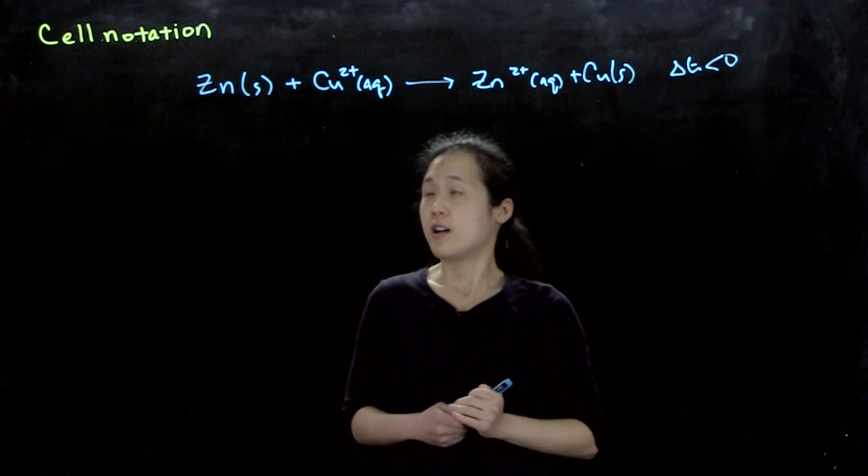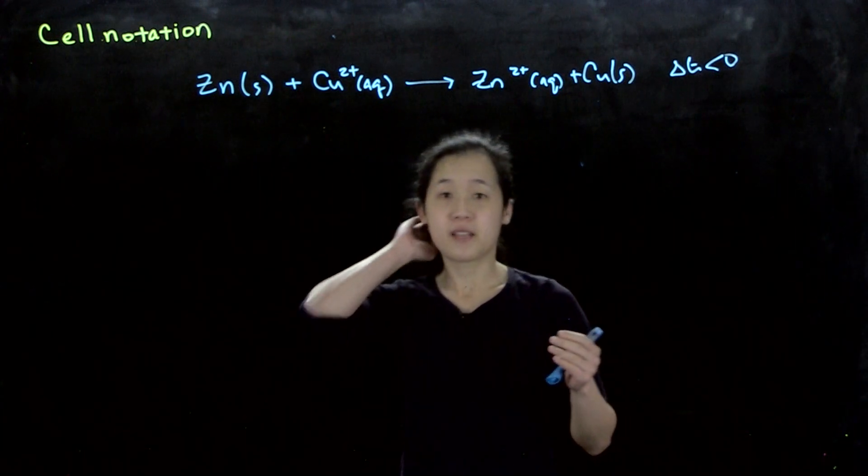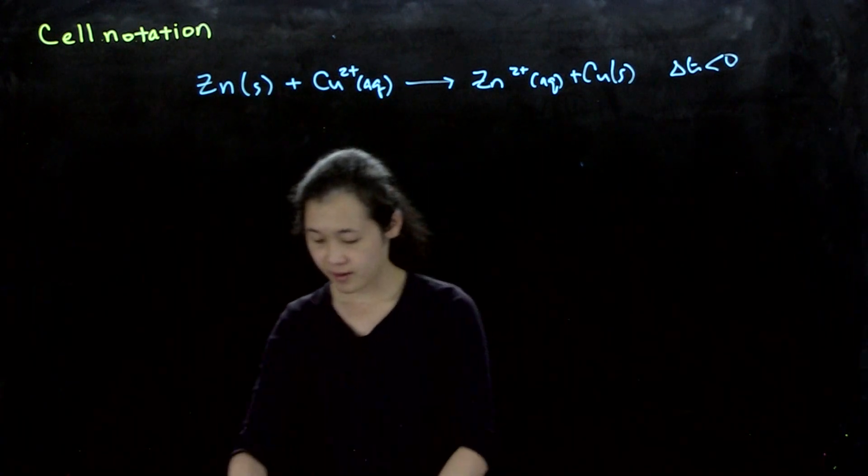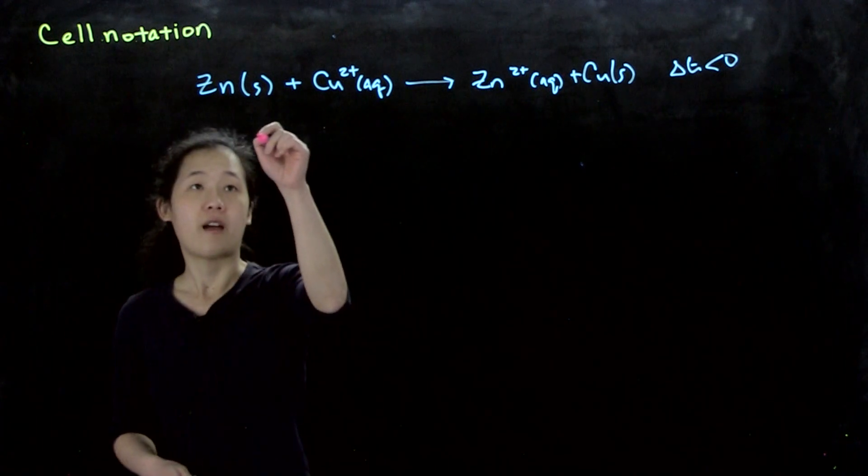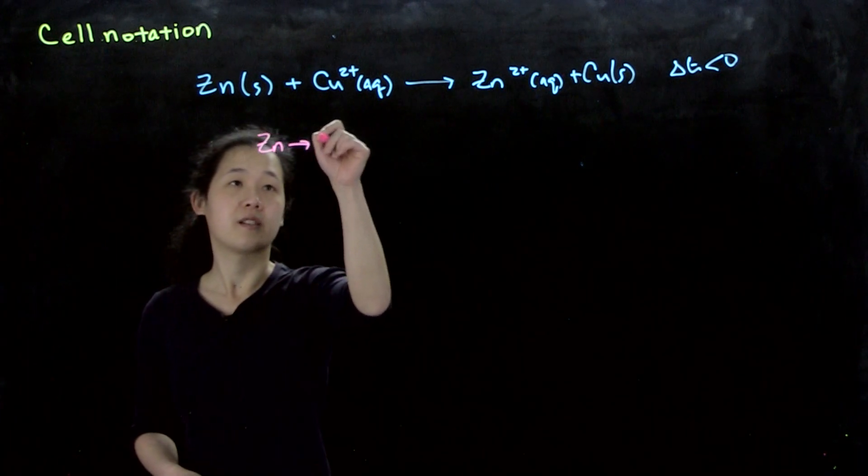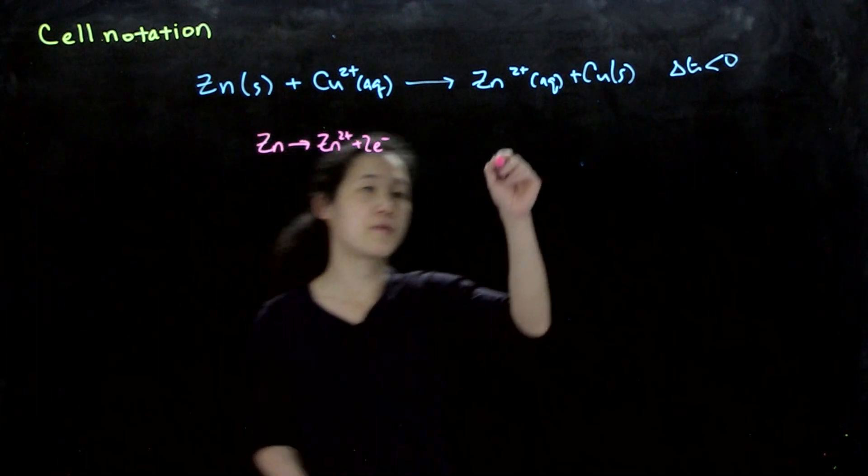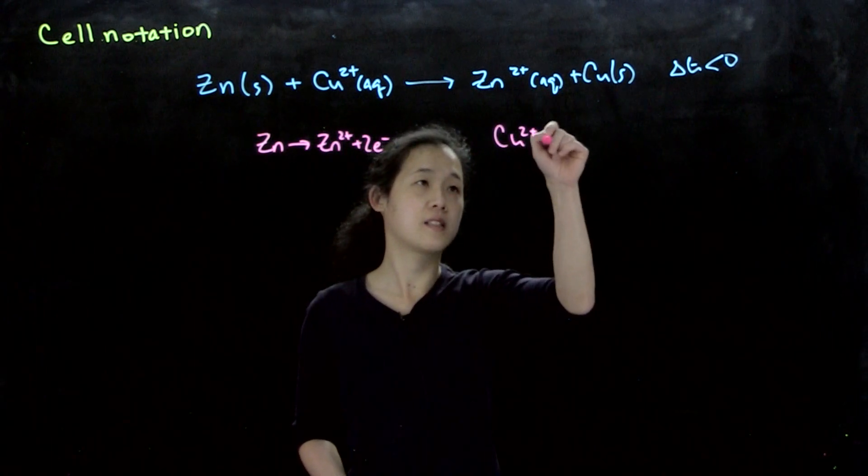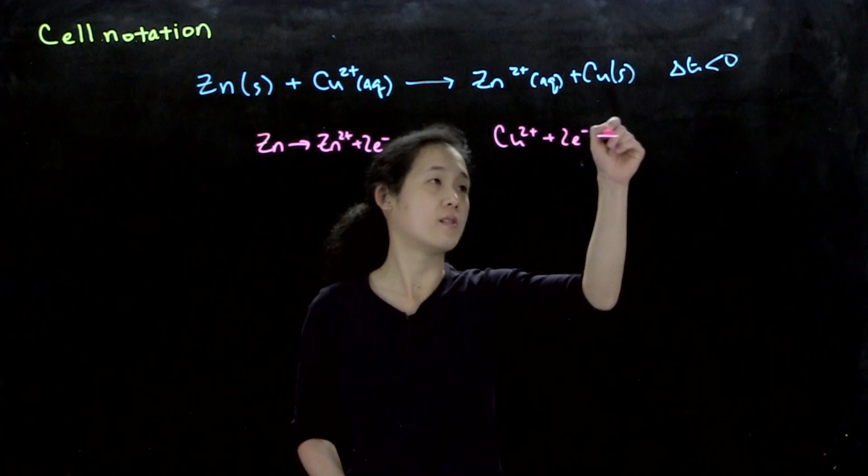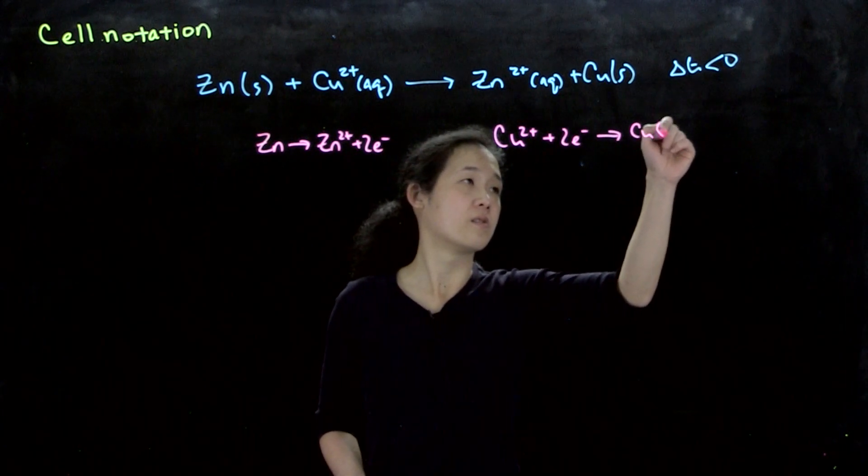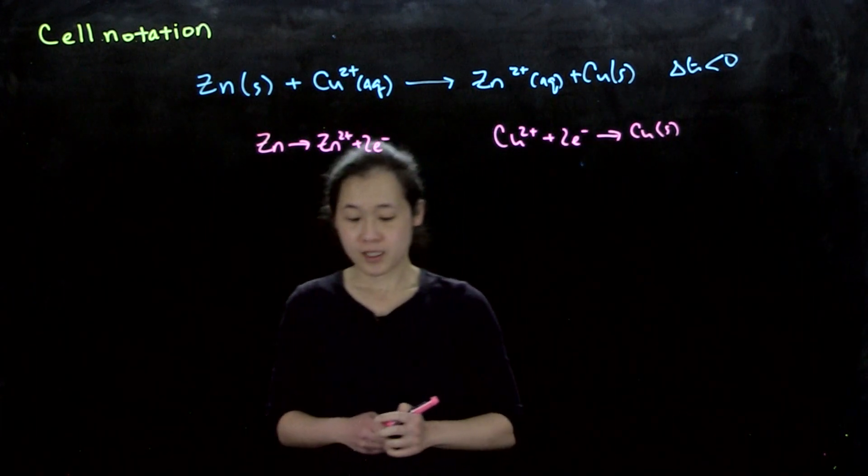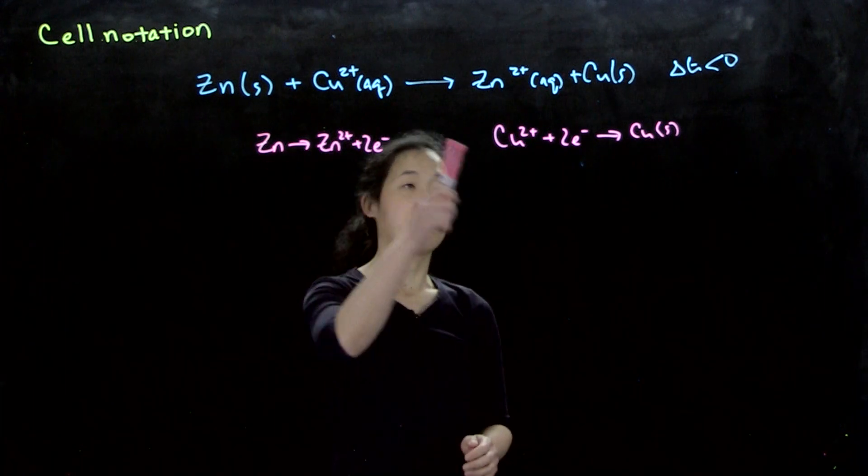If we separate out the two half reactions, we have zinc going to zinc 2+ plus 2 electrons, and then copper 2+ going to copper. These are our two half reactions: oxidation and reduction.